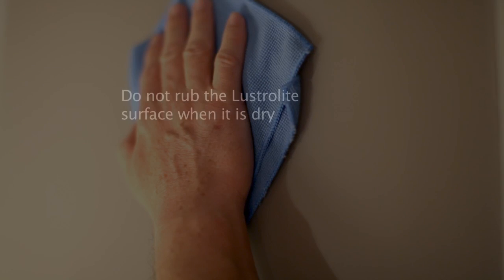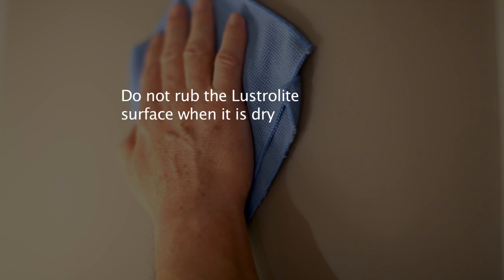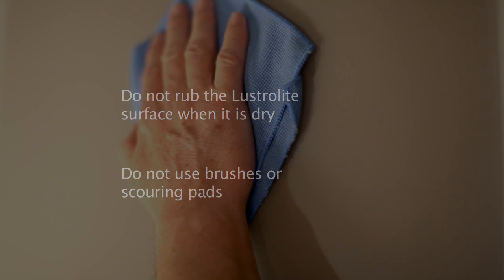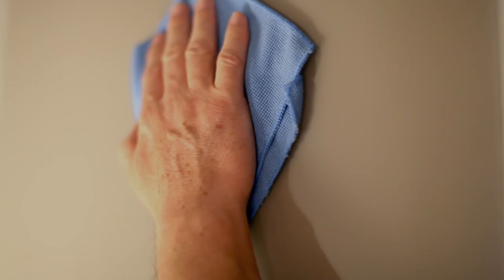After installing your new Xenolite Plus, it's important to clean all the panels. This can best be achieved by using a soft microfiber cloth or chamois with non-abrasive detergent in warm water. Grease or oil can be removed with suitable plastic cleaners. Do not rub the Xenolite Plus surface when it's dry or use brushes or scouring pads on the product as this may damage the high gloss surface.